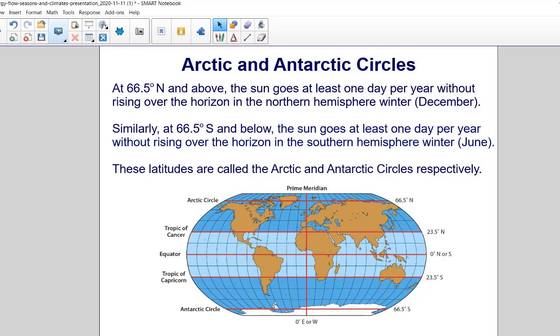At 66.5 degrees north and above, the Sun goes at least one day per year without rising over the horizon in the northern hemisphere winter, in December.